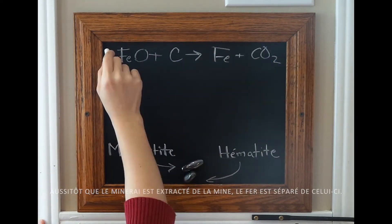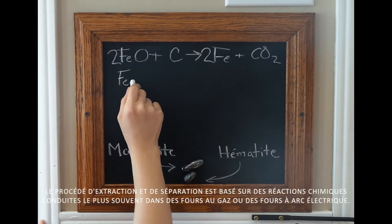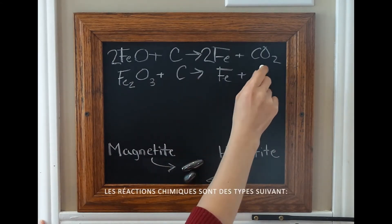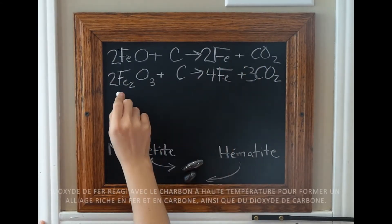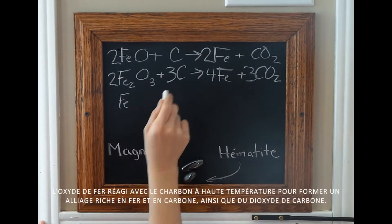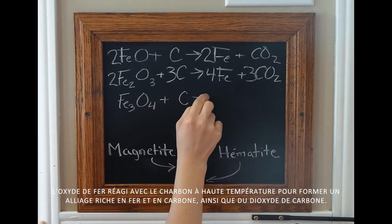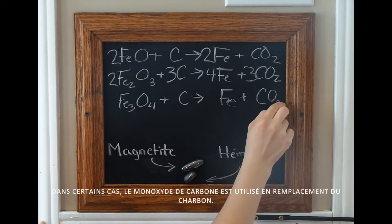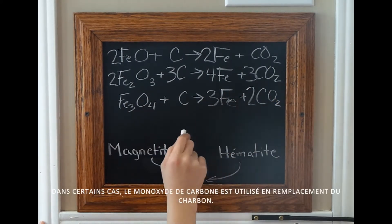Various chemical reactions conducted in a blast furnace are used to isolate the iron. The general chemical equation is as follows: iron oxide reacting with carbon forms iron and carbon dioxide. In some cases, carbon monoxide is used in place of carbon.